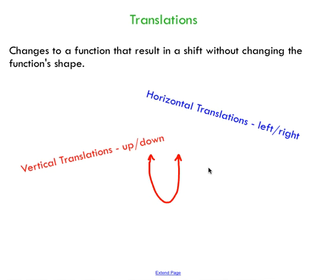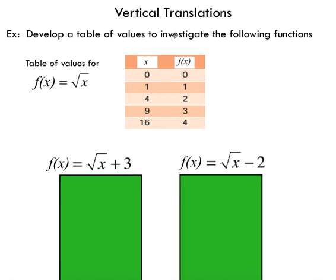You've seen this with quadratics. Now I'm going to show you how to translate functions such as the square root function. I'm going to start with vertical translations using the square root function. Remember, when graphed it produces a hook shape. I've developed a table of values — you can arbitrarily pick X values. I've picked X values that when you take the square root of them, you get nice whole numbers.